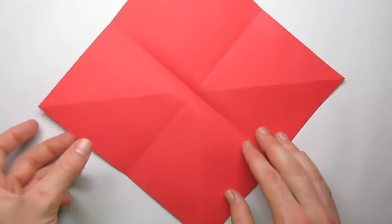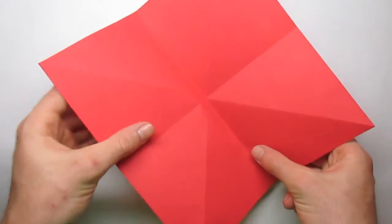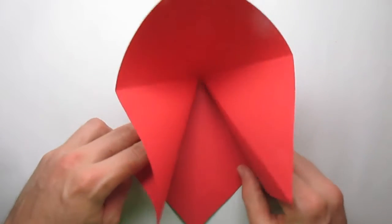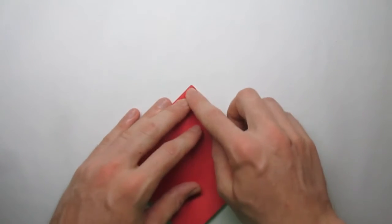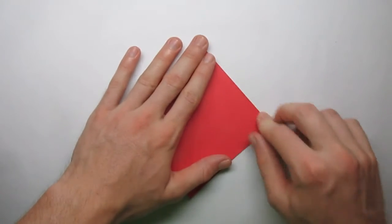Okay, now using the creases we just made, we're going to collapse the paper like this into a square base, or as some people say, a preliminary base, because it's a pretty classic base.